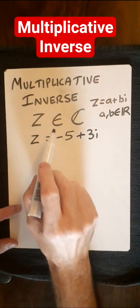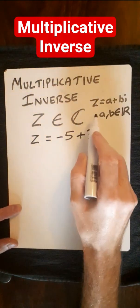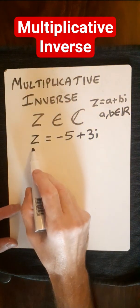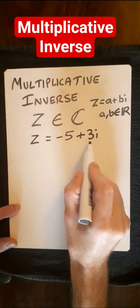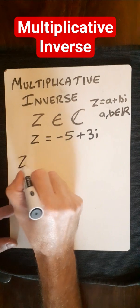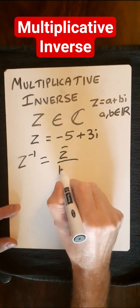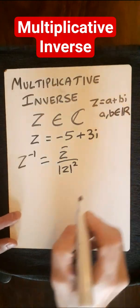Here we're going to find the multiplicative inverse of a complex number where z equals a plus bi, and a and b are real numbers. In this case, we've got z equals minus 5 plus 3i. The multiplicative inverse is denoted as the conjugate of z divided by the modulus of z squared.